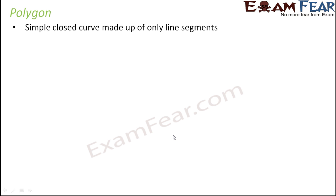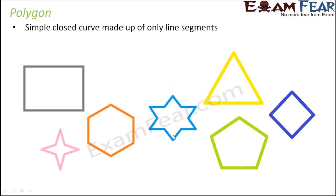So what is a polygon? It is a simple closed curve made up of only line segments. Let us look at some closed curves and find out which are polygons. Now, what is a simple curve? A simple curve is one which doesn't cross over itself. For example, if a curve passes over itself or intersects itself, that is not a simple curve. But for a polygon, they are all simple curves.